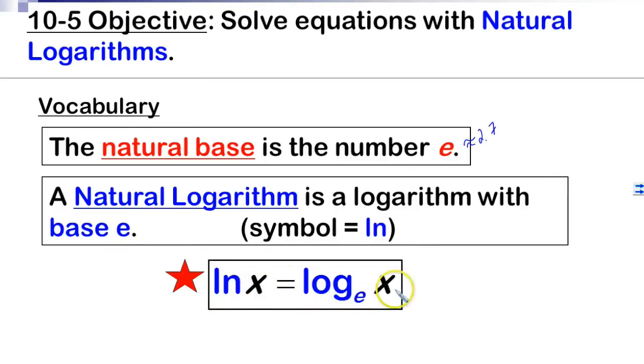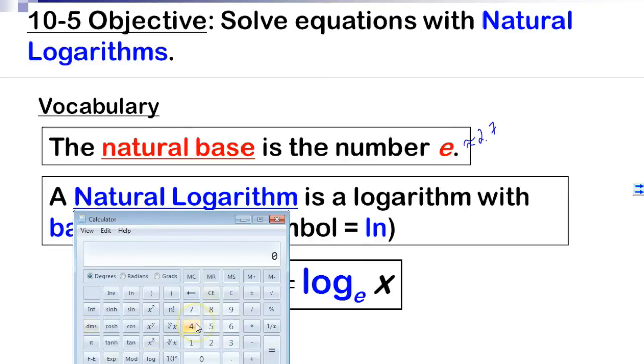If you see ln x, that really means log base e of x. Very quickly, let me show you how to look at this on a calculator. First, in this little scientific calculator here on my computer, I see that I have two buttons: the ln button and let's see if I have the e button somewhere.